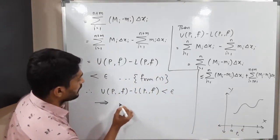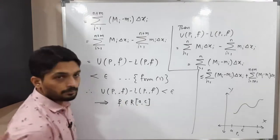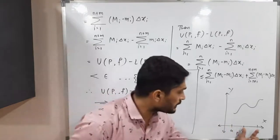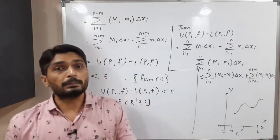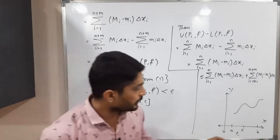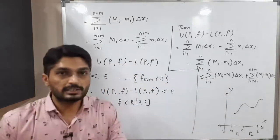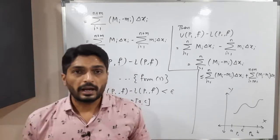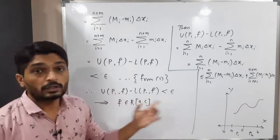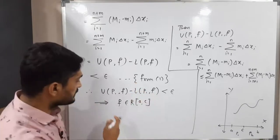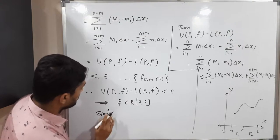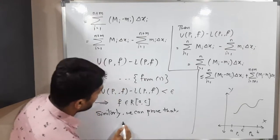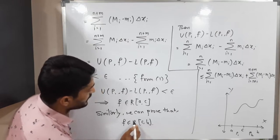So we have proved f is Riemann integrable on [a, c]. Similarly, we can prove that f is Riemann integrable on [c, b] — we start with partition P₂ of [c, b] by taking the remaining points from P, apply the same logic, and again use inequality (1) to get U(P₂, f) − L(P₂, f) < ε. You can solve this as an exercise.